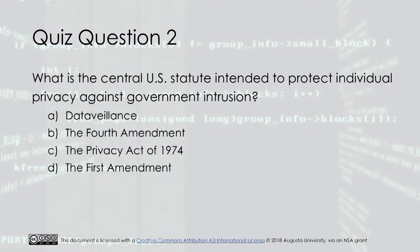Quiz question two: What is the central U.S. statute intended to protect individual privacy against government intrusion? A) Data surveillance. B) The Fourth Amendment. C) The Privacy Act of 1974. D) The First Amendment. The answer is C: the Privacy Act of 1974.